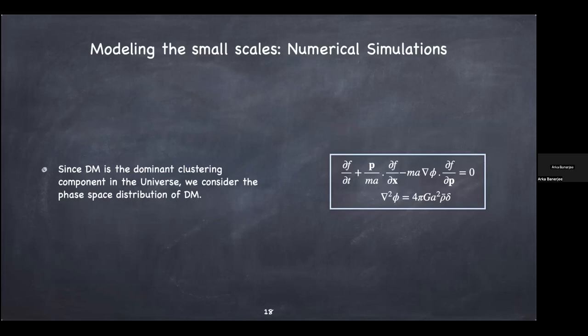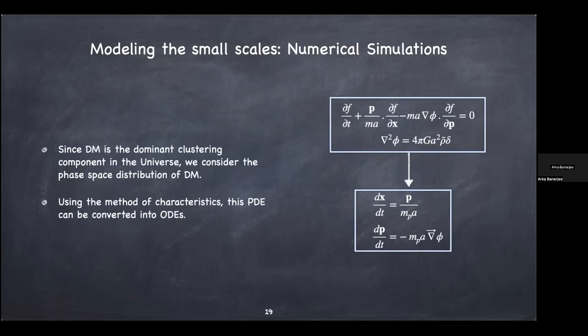Coming to numerical simulations — what do they simulate? They simulate the phase space density of dark matter. Dark matter is the dominant clustering component, so understanding its phase space evolution gives us a handle on cosmological structure formation. You can write down the equation governing the evolution: F is the phase space distribution, and it looks like the Boltzmann equation in expanding spacetime. It's technically called the Vlasov-Poisson system. The phase space distribution is a six-dimensional entity — seven with time — making direct grid-based solution almost intractable, though some groups have tried.